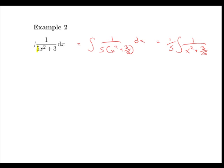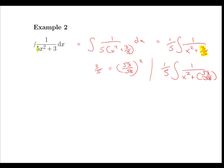Now we need the integral in the form of 1 over x squared plus a squared. So what we need to do is transform this 3 over 5 into something squared. But 3 over 5 is simply equal to root 3 over root 5, all squared. So we can rewrite the whole expression as 1 over 5 the integral of 1 over x squared plus root 3 over root 5 squared. Now if we integrate this we get 1 over 5 times 1 over a, or 1 over root 3 over root 5, tan inverse x over root 3 over root 5, plus c.